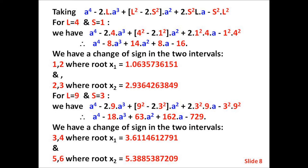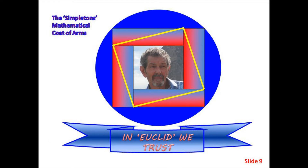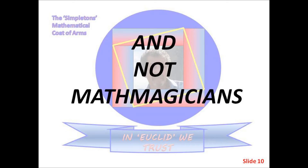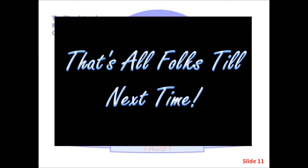The Simpleton's mathematical coat of arms: in Euclid we trust, and not mathematicians. That's all, folks — till next time.